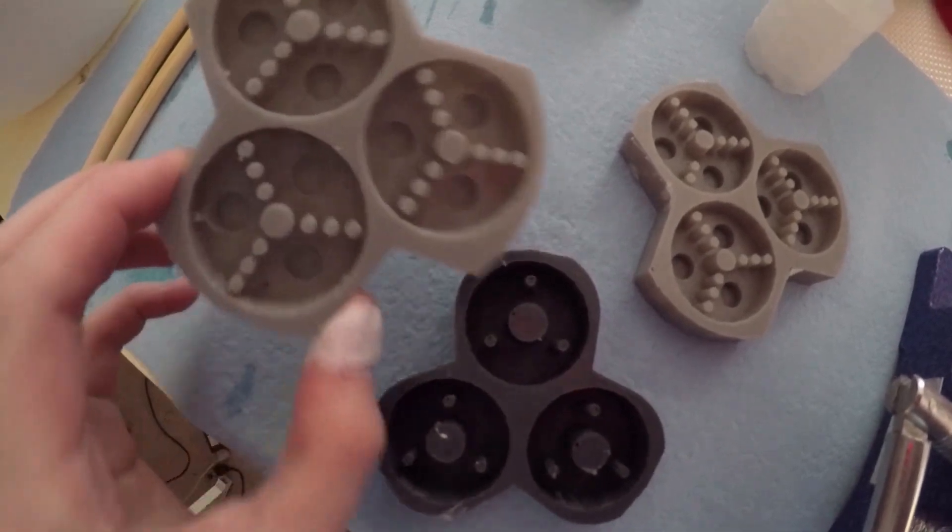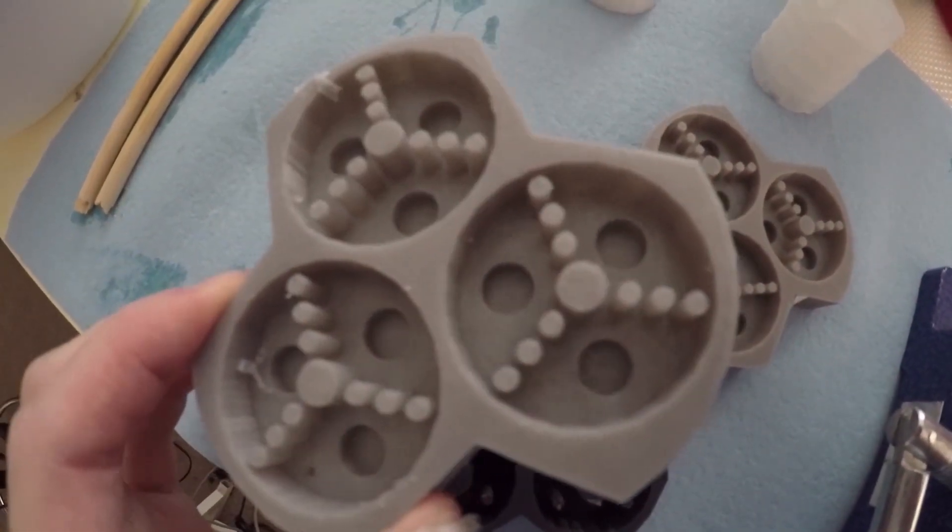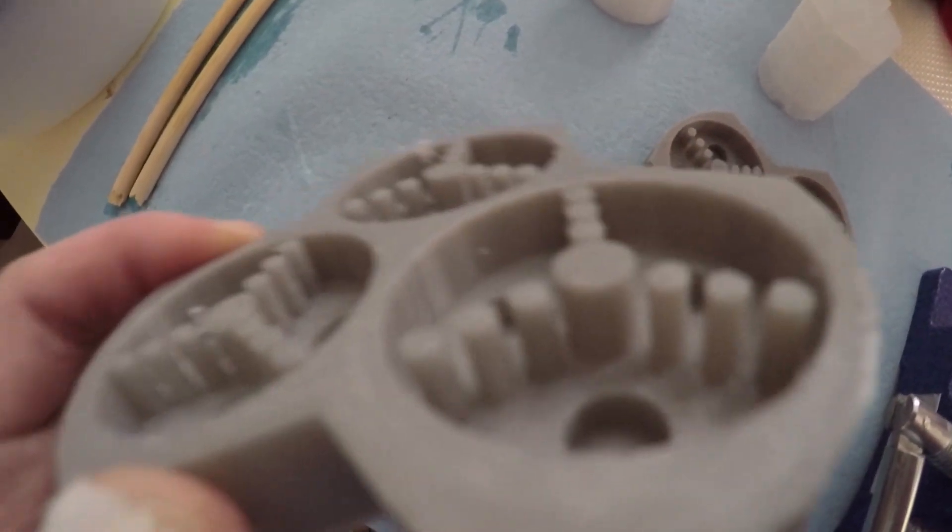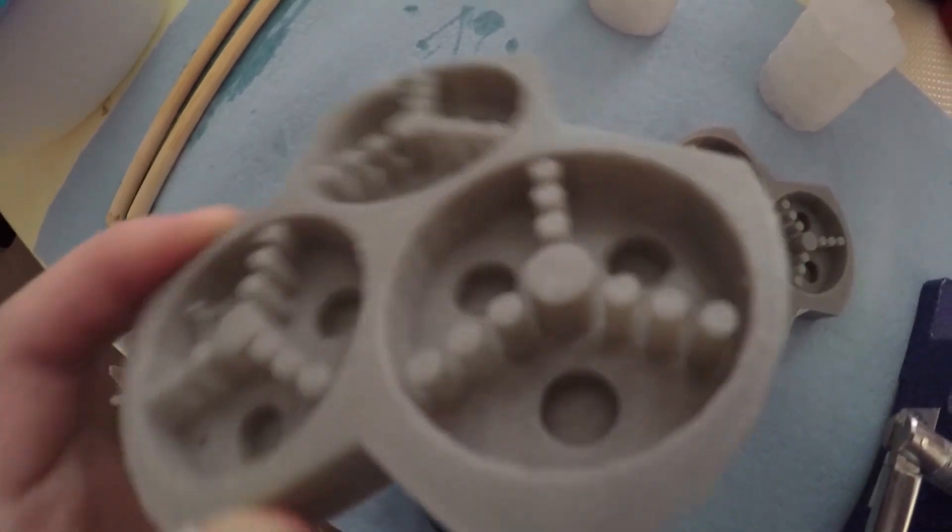What I went ahead and did for the new revision, as you can see, I have three pegs. So I have three holes on each axis. So the reason that I did this is so that...